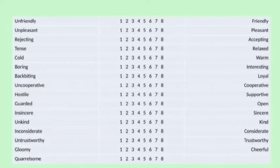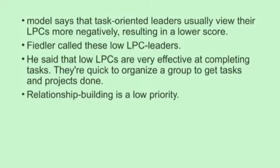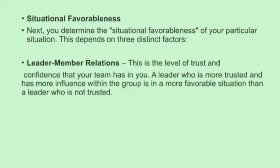When you add up the scores on the LPC scale, if the scores are low, the leader is not a relationship-friendly leader — they are a task-oriented leader. Task-oriented leaders usually view their LPCs more negatively, resulting in a lower score. Low LPC leaders are quick to organize a group to get tasks done, but not for relationship building.